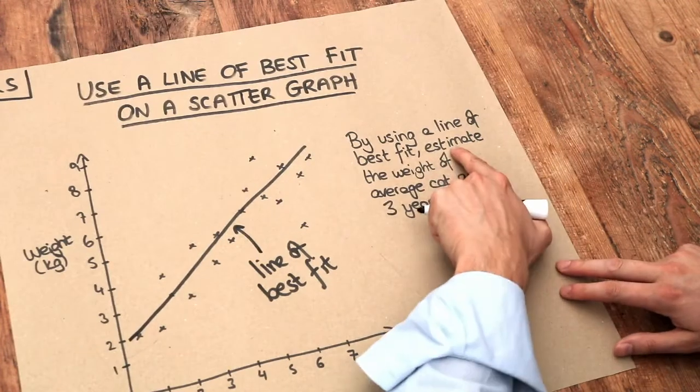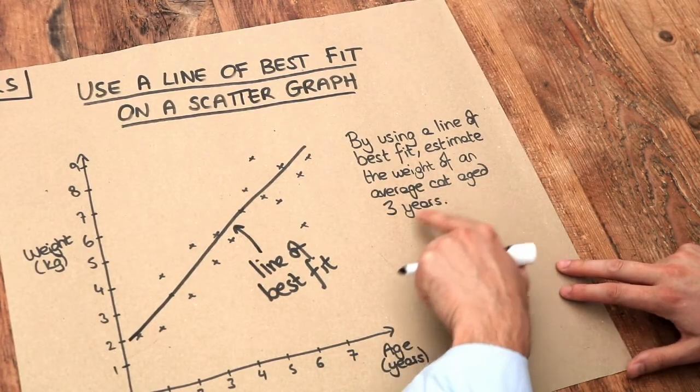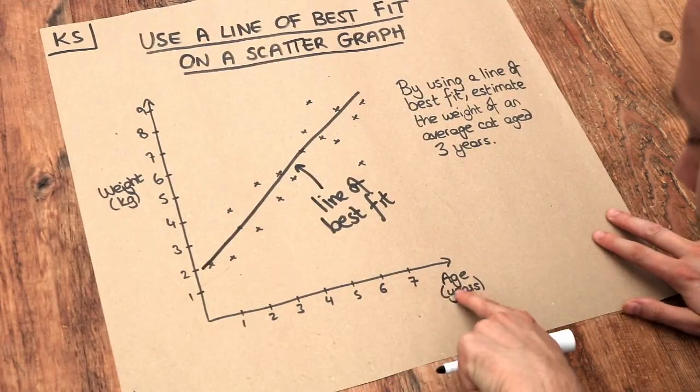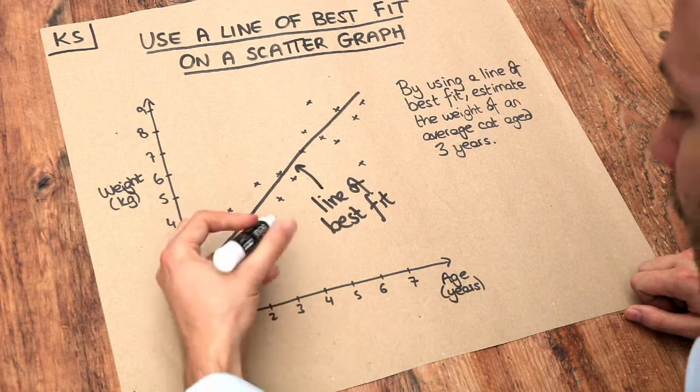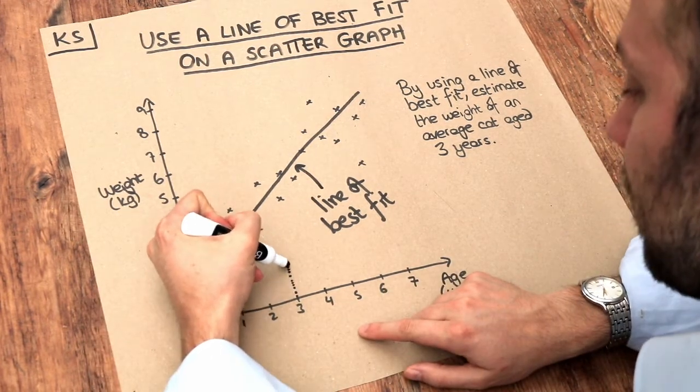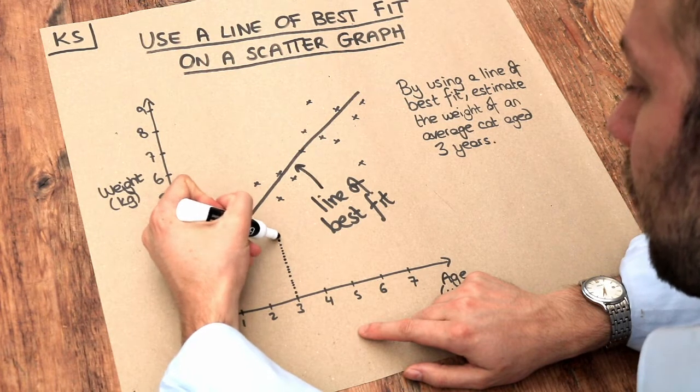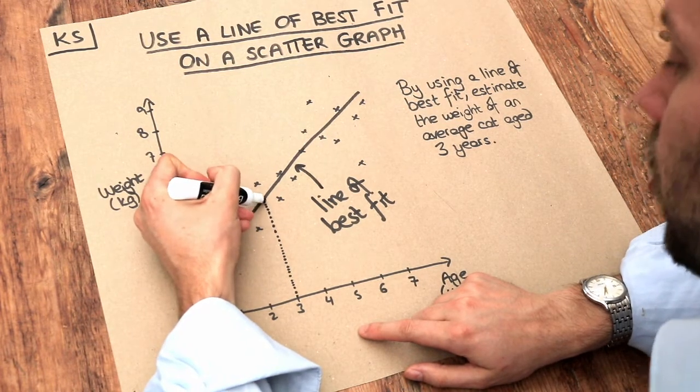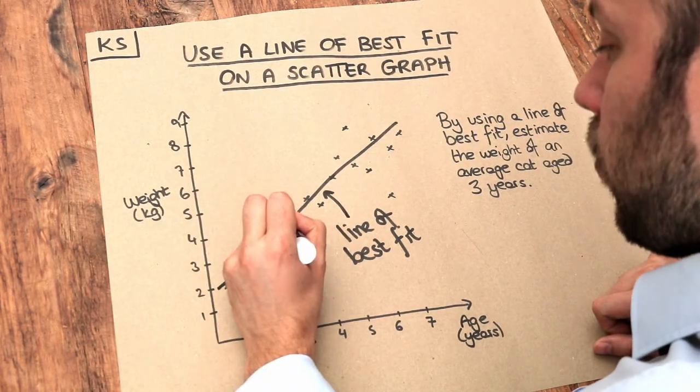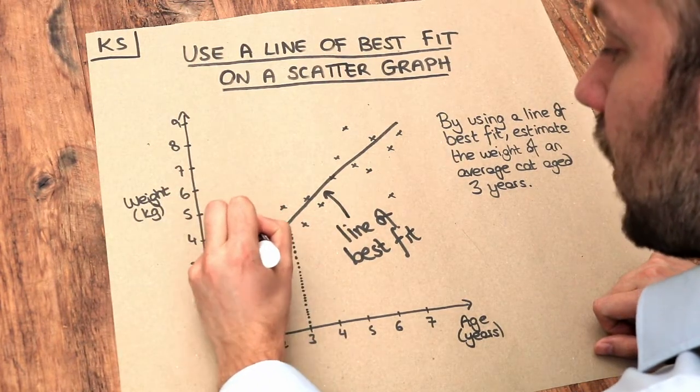So we want to estimate the weight of the average cat aged three years. Now what you do is we look up three years on here—this is the age axis—and we look for three. We do that, and then what we do is use this as a line graph, so we go up from that three until we hit our line of best fit, and then we go left until we get to the other axis.